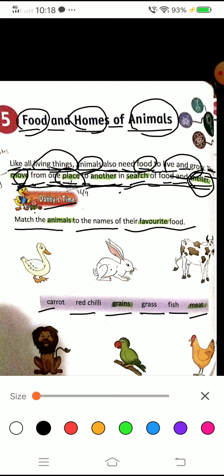So children, here is one activity. Dobby's time. Match the animals to the names of their favorite food. In the picture you can see animals, and in the box you have food items with their names. You have to match which animal eats which food, their favorite food.